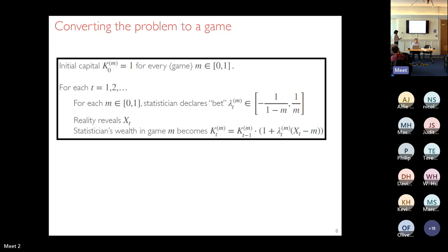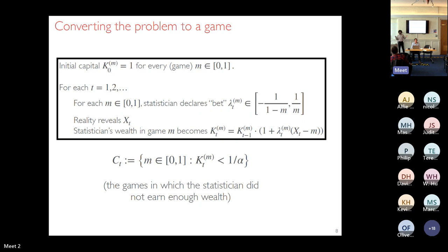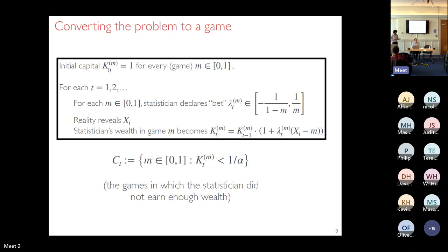The confidence interval or confidence sequence is simply the set of games in which the statistician did not make enough money. For example, with alpha = 0.05, the target is 1/alpha = 20 dollars. Starting with one dollar, the confidence set at time t is all m for which K_t^m has not yet reached 20. That's the construction — play all games, and the games where you haven't gotten rich enough form your confidence set.